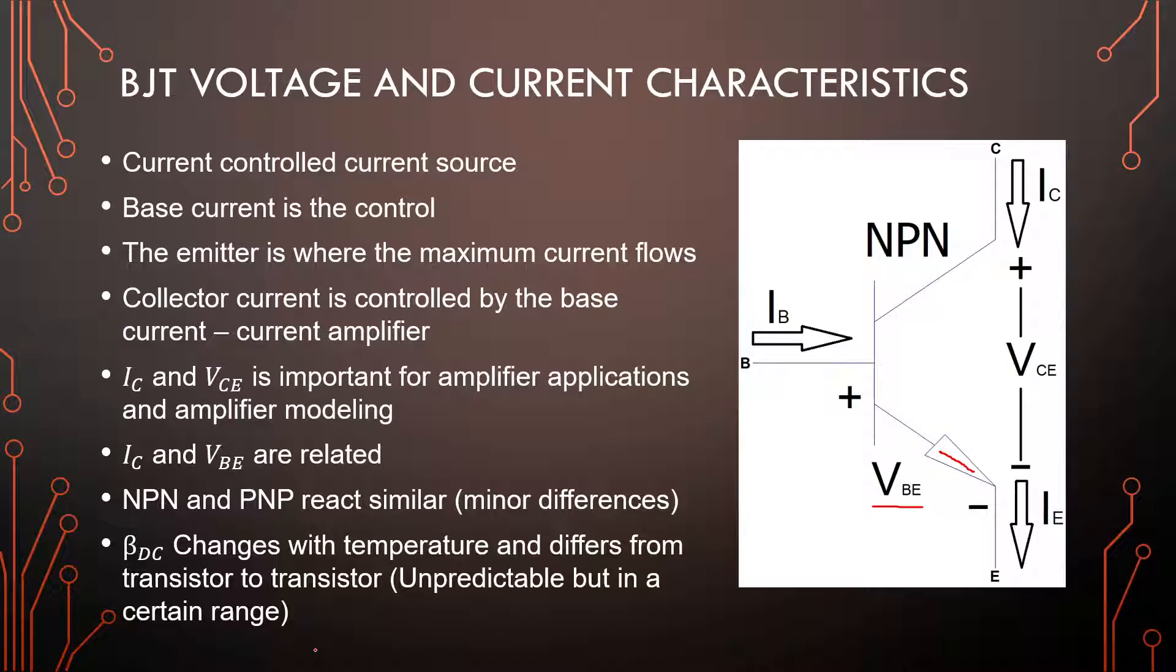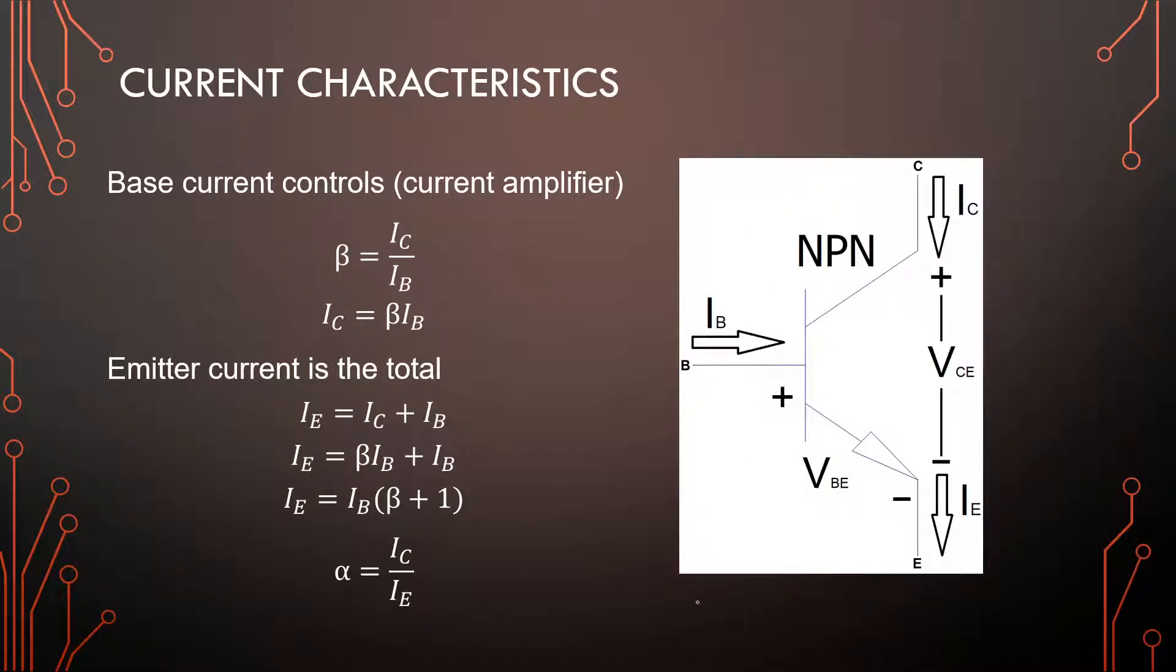So that is some of the BJT stuff in a nutshell here. Let's go over to our current characteristics. As we said, IB is the control valve of our BJT and it controls the collector current. So the collector current is large. The base current is small and they have a relation with one another and that is our beta value. So the beta is our current gain of our transistor. So it's IC over IB. IC is beta times IB. So you need to get to know these two quite well. These equations are going to be used regularly.